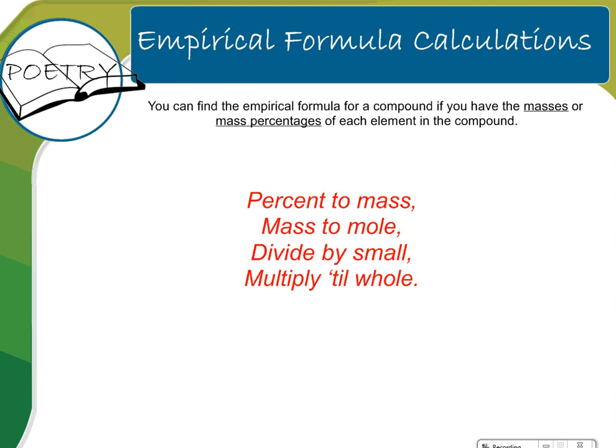So how do you find the empirical formula for a compound? You'll need the masses or the mass percentages of each element in the compound. I realize in your notes there's five steps that you need to follow to figure out the empirical formula. But instead, I just memorized this poem, which is basically the steps simplified. And there's a little chant to it that helps you to memorize it.